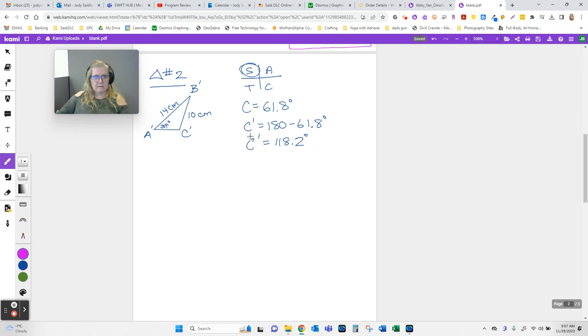So there's the first answer for triangle number two. Now, the next easy thing, of course, I need to go 180, take away 118.2, take away 39, and I know angle B is 22.8.